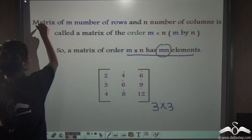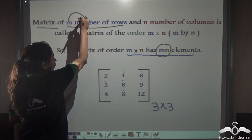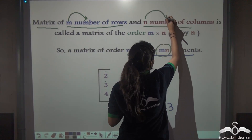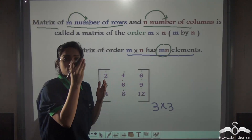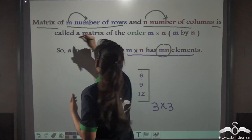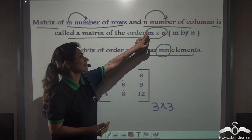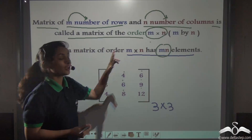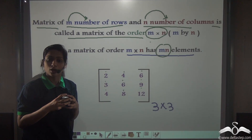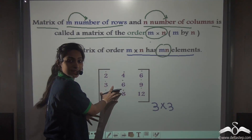Just recapitulate: M denotes number of rows and N denotes number of columns. Always the number of rows comes before the number of columns — this is called a matrix of the order M by N. If we know the order of any matrix, we can multiply the number of rows into number of columns to get MN, which is the total number of elements inside the matrix.